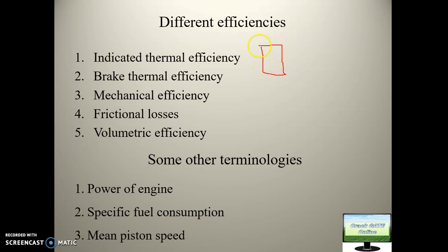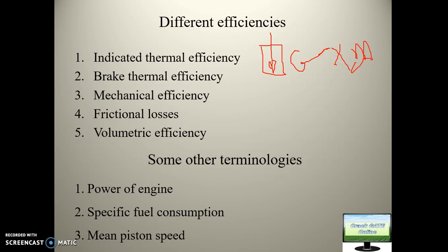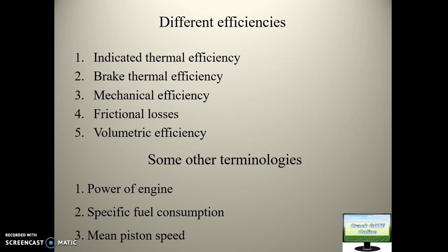Looking at the combustion chamber — fuel is injected inside, and the calorific value of the fuel times its mass gives the energy entering the combustion chamber. However, not all of that energy is converted into useful energy — there are losses. So indicated thermal efficiency equals indicated power (the power accumulated inside the combustion chamber) divided by mass of fuel times calorific value of fuel.